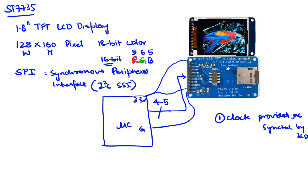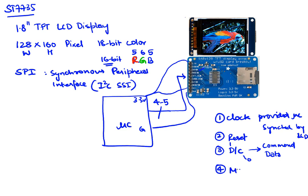One of those pins is the clock pin. The second pin we need is a reset pin — reset is just to start over. The third pin is the DC pin, which tells the display whether we are issuing a command or data. When we write a zero on the DC pin, that's a command; when we write a one, that's data being sent from the microcontroller to the display.